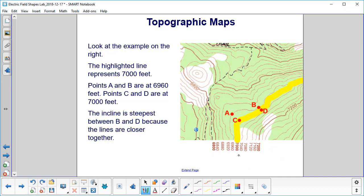We're going to highlight the 7,000-foot line in yellow. And notice that points A and B are at 6,960 feet. Points C and D are at 7,000 feet.